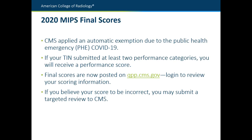If you see that there's an issue with your final score, you are able to submit a targeted review request to CMS. The deadline for this is October 1st. CMS recently sent out an email letting everyone know that there's going to be an adjustment to the final scores that were already released. We don't really know any additional information about that, but it could be that something was calculated incorrectly and they're going to possibly re-release scores soon. Whatever we can find out, we'll keep everybody posted. Go ahead and log on to qpp.cms.gov and look at your score — if there's a problem, look into doing a targeted review.